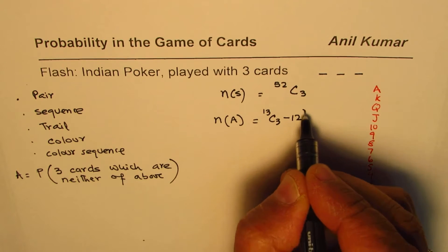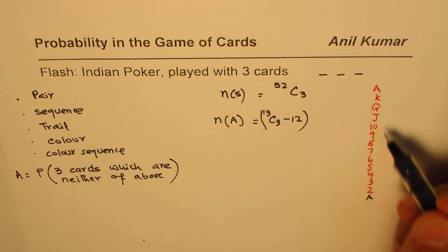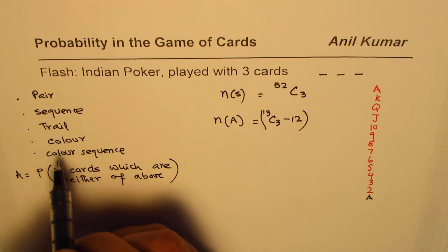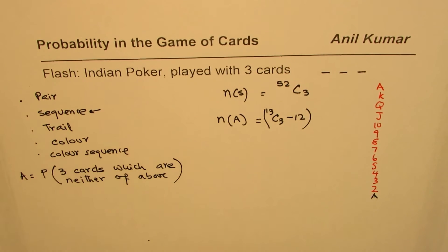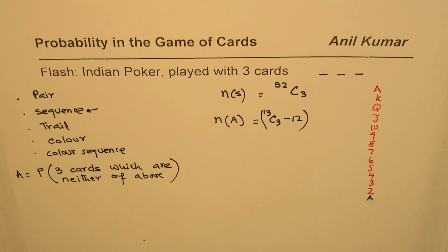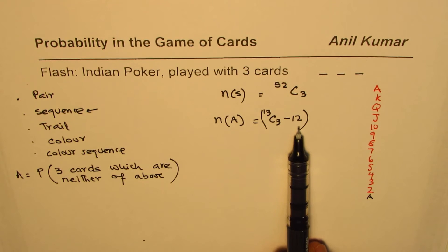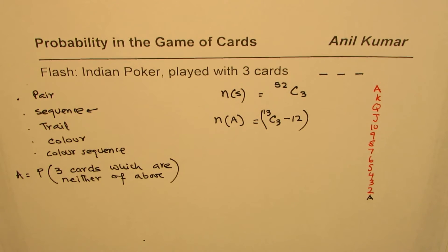So these will take away those 12 combinations which can form a sequence. So we have taken care of this part. So these cards selected will not form a sequence, since we have taken away those 12 options which will form a sequence.